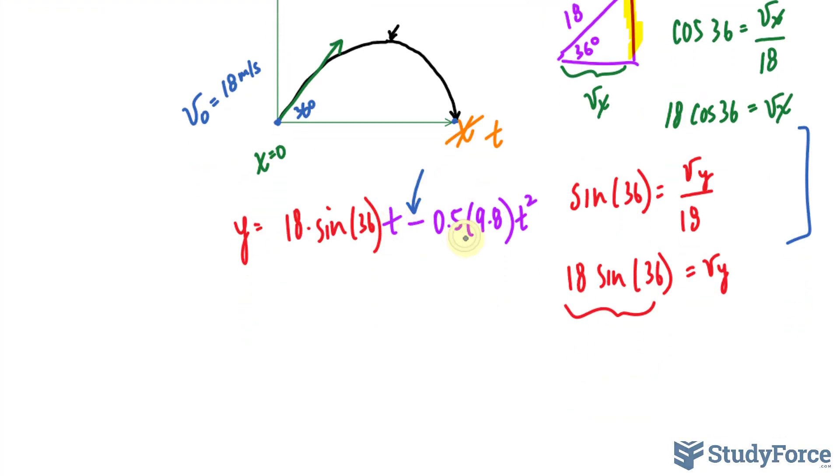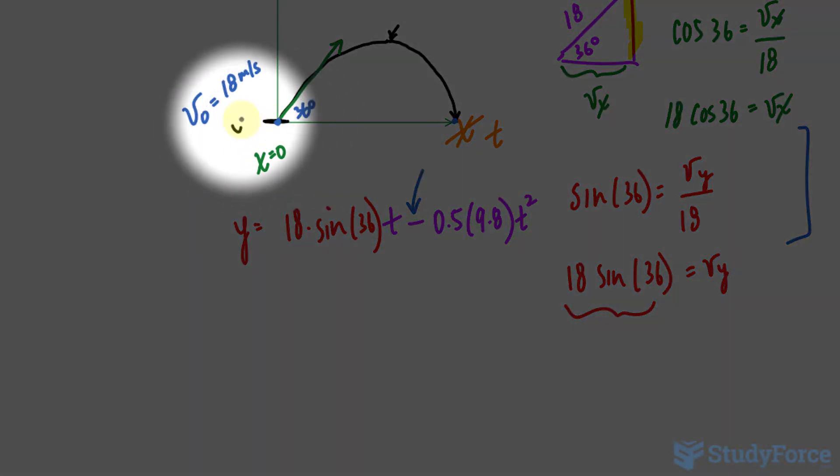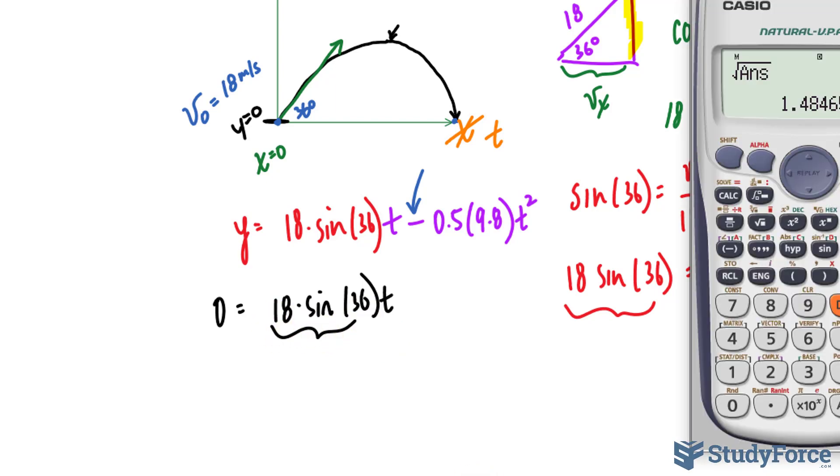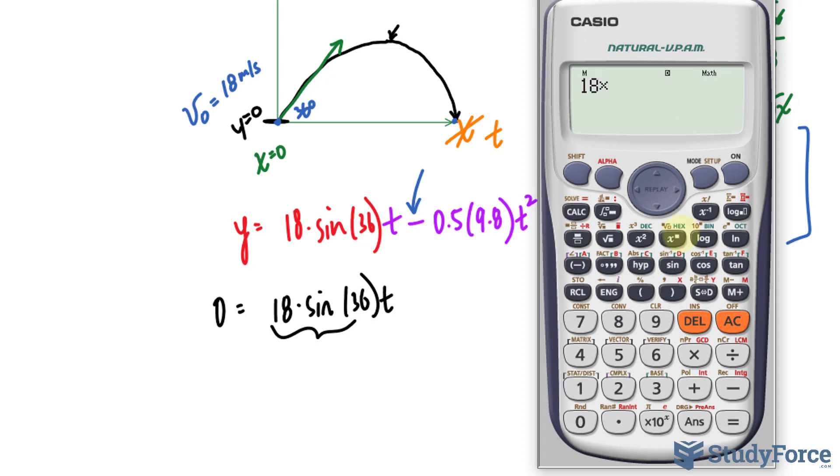Now what we have to do is solve for t. t will represent the time it takes for the ball to hit the ground. And the ball will hit the ground when we are at this level, which is y = 0. So I'll replace this y with 0 and solve for t. Let's go ahead and do that. Now we have 0 = 18 sin(36) × t and we can actually find out what that is equal to using our calculator. Make sure that your calculator is in degree mode.